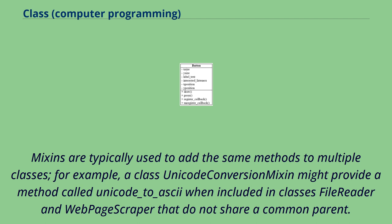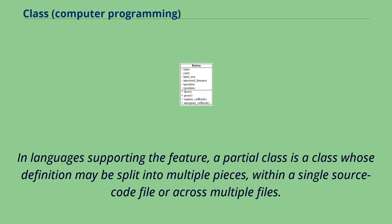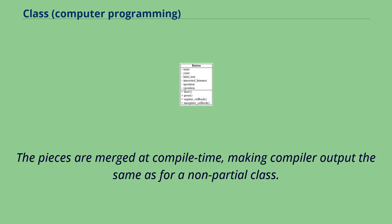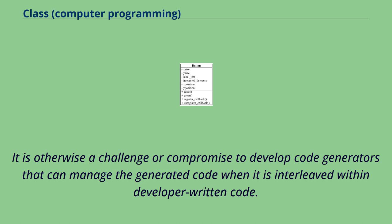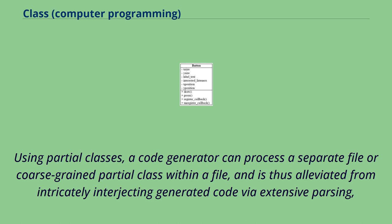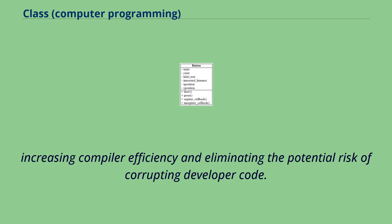Mixins are typically used to add the same methods to multiple classes. For example, a class UnicodConversionMixin might provide a method called unicode_to_ASCII when included in classes FileReader and WebPageScraper that do not share a common parent. In languages supporting the feature, a partial class is a class whose definition may be split into multiple pieces within a single source code file or across multiple files. The pieces are merged at compile time, making compiler output the same as for a non-partial class. The primary motivation for partial classes is to facilitate the implementation of code generators such as visual designers, alleviating the challenge of managing generated code when interleaved within developer-written code.